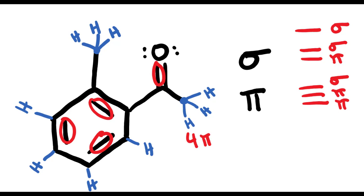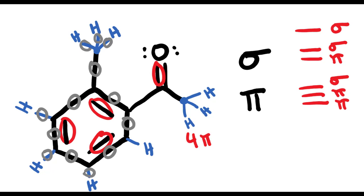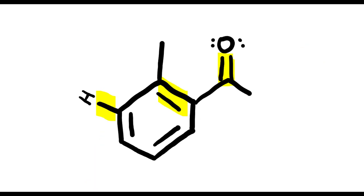Now that we've drawn all the hydrogens, we can go ahead and count the total number of sigma bonds. Remember, each double bond has one sigma bond, and each single bond also has one sigma bond. So when we go through to count, we get 1, 2, 3, 4, 5, 6, 7, 8, 9, 10, 11, 12, 13, 14, 15, 16, 17, 18, 19, 20 — for a total of 20 sigma bonds in this molecule.